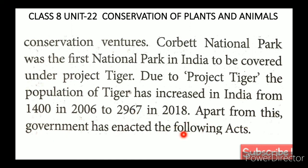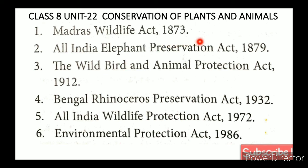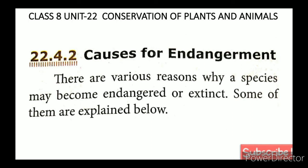The government has enacted the following acts: The Madras Wildlife Act 1873, The All India Elephant Preservation Act, The Wild Bird and Animal Protection Act 1912, The Bengal Rhinoceros Preservation Act 1932, The All India Wildlife Protection Act 1972, and the Environmental Protection Act 1986.